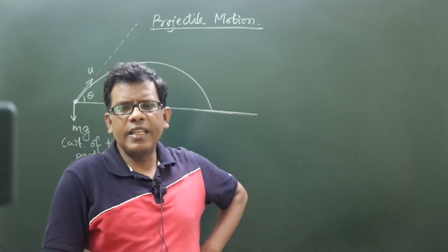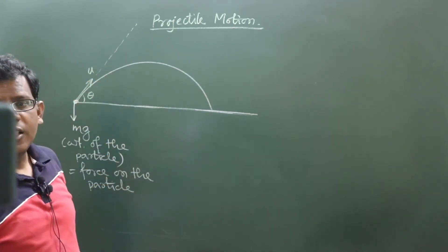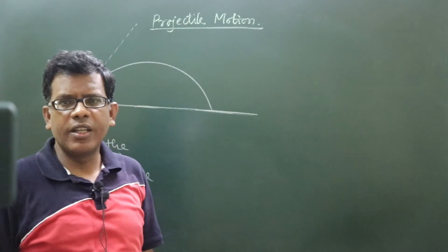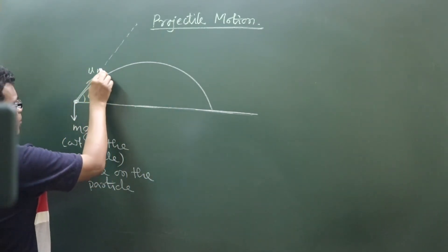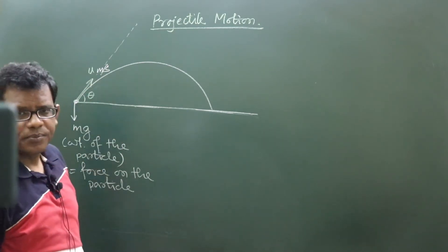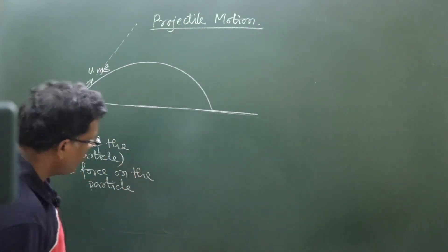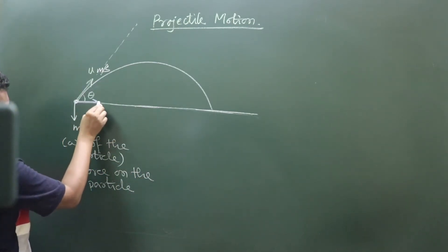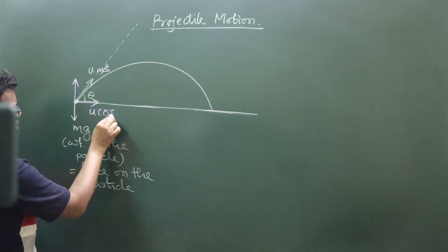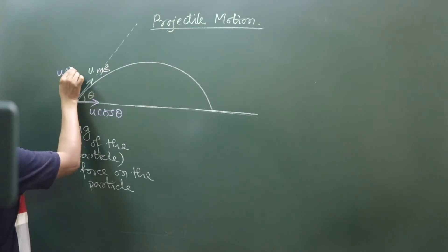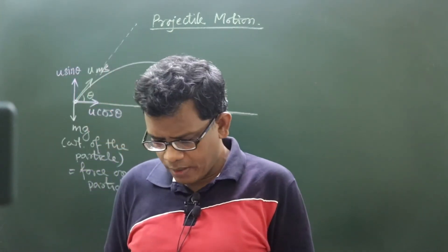As I explained in our last class, the initial velocity vector — that means in the initial direction — the projected velocity that is u meters per second. If we resolve it into two components, then the respective components will be known as u cos theta and u sin theta respectively.